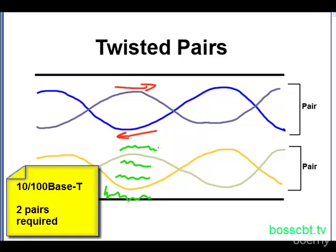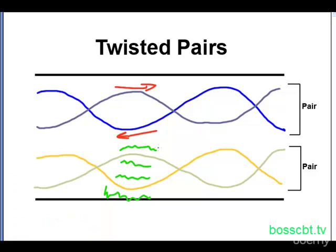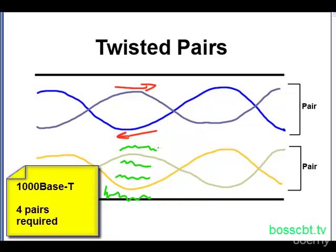10 base T and 100 base T require two pairs of the four pairs in total to communicate. 1000 base T actually requires all four pairs, or it uses all eight wires.